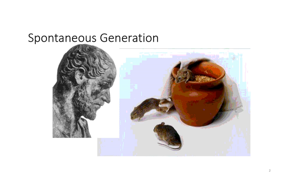First we're going to look at the concept of spontaneous generation, which was largely believed by many in science up until the last several hundred years. One of the first people to set the bar for this idea was Aristotle, a Greek philosopher. He actually had a recipe for life: take a sweaty toga, add some grain, throw it in the corner, and a few weeks later you'll have rat babies in that toga.